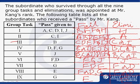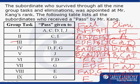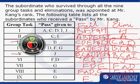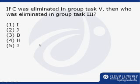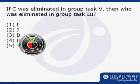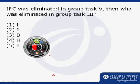Definitely, if C gets eliminated in round 5, the person who gets eliminated in round 3 has to be I. Hence the correct answer has to be choice 1, which is I.